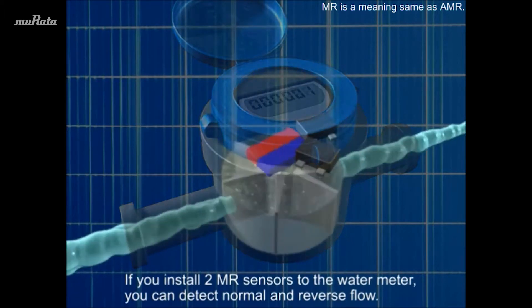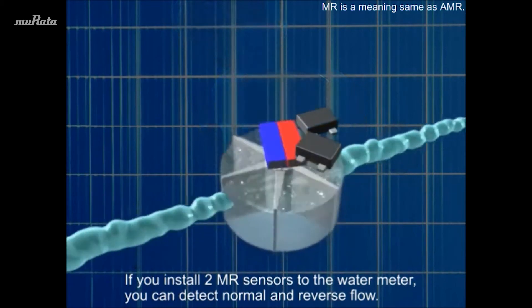If you install two MR sensors to the water meter, you can detect normal and reverse flow.